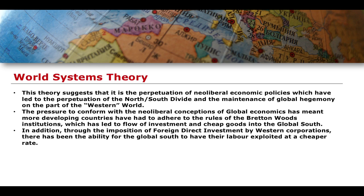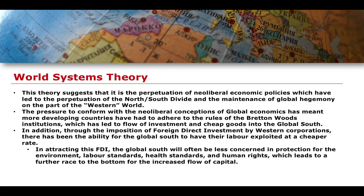Through the imposition of foreign direct investment by Western corporations, the global South's labour can be exploited at a cheaper rate, which is good for the global North but not for ordinary people in the global South. Attracting FDI therefore leads the global South to be less concerned with protection of the environment, labour standards, health standards, and human rights — creating a race to the bottom where global South countries increasingly compete for Western foreign direct investment by throwing away concerns for the environment, labour standards, and human rights. The brunt of this economic exploitation is ultimately borne by ordinary citizens in the global South.